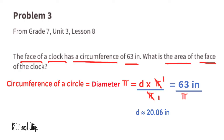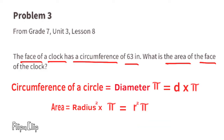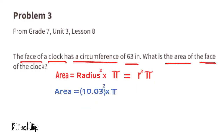The radius of the face of the clock is half of 20.06 inches, or approximately 10.03 inches. Substituting r with 10.03 inches, the area is 10.03 squared times pi. The area of the face of the clock is approximately 315.89 inches squared.